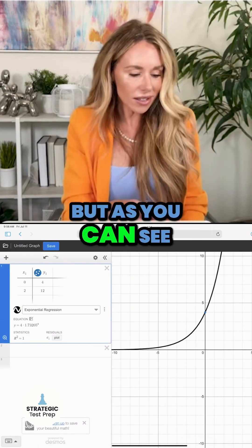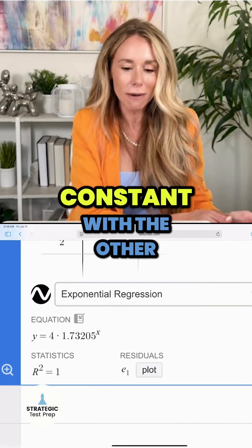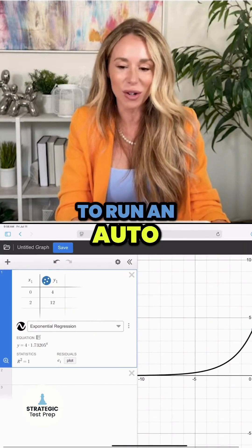And in this case it's actually addition, so you don't want to run an auto regression on this. You need to type in manually what the equation is.